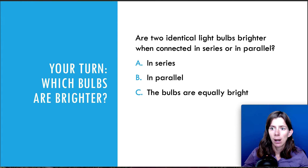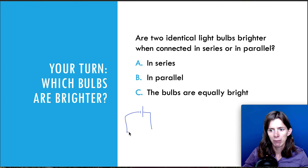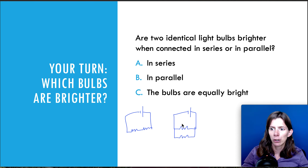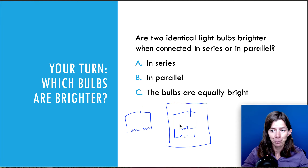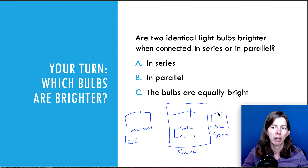Let's do one more: are two identical light bulbs brighter when connected in series or in parallel? We said that two in series were less bright than just an individual one, but we said that the two in parallel were just as bright as the individual one. So by putting those two questions together, that tells us the bulbs in parallel are going to be more bright than the bulbs in series — because the parallel ones had the same brightness as the individual bulb, while the two in series were less bright.